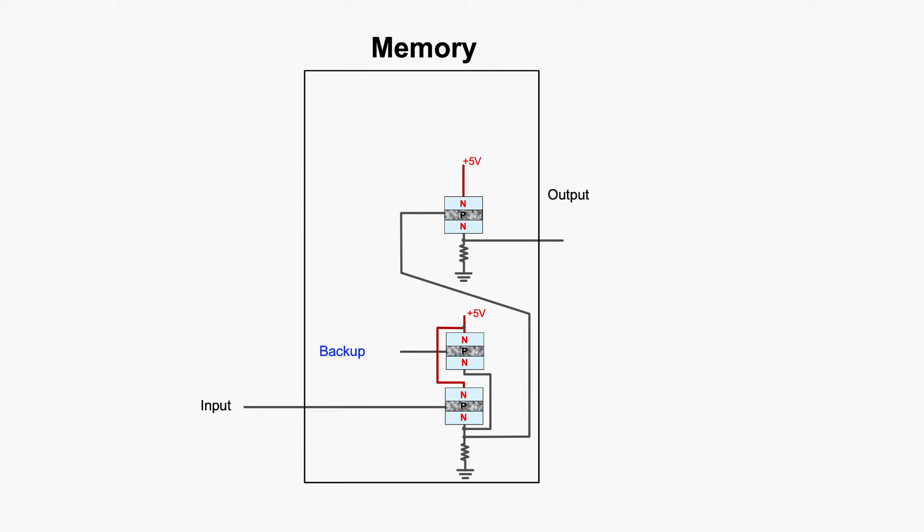Let's place the two parts on top of each other. A high input will get bottom route conducting. Turning on the output. Now if you feed the output back to the second route, the backup will be turned on.